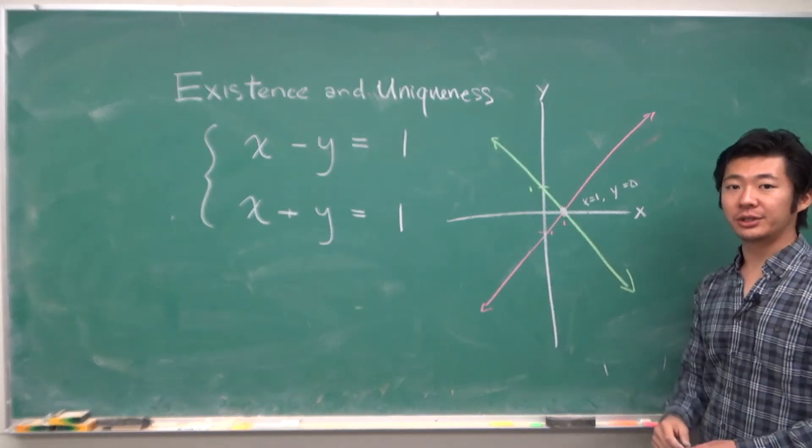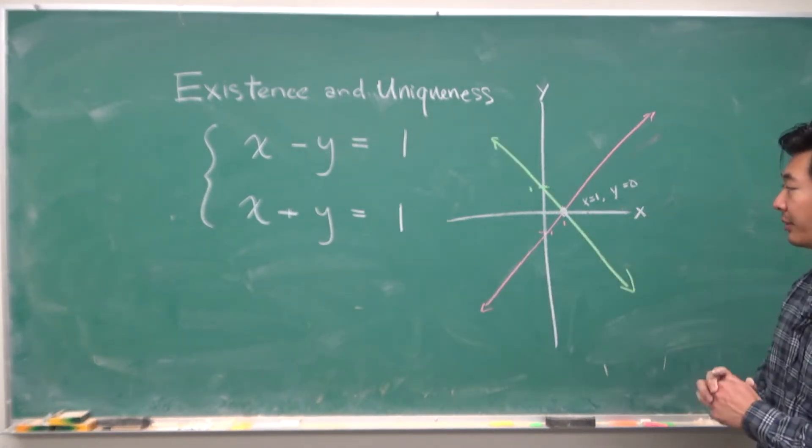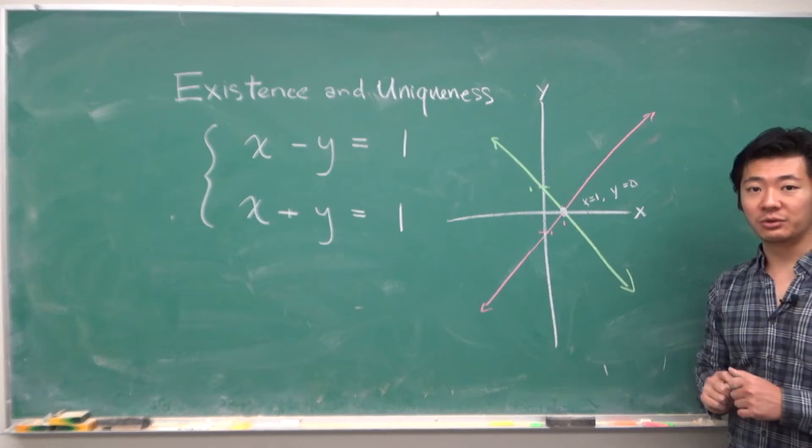And this is their only solution. No other points will satisfy both equations at the same time. So this is an example of when there is only one unique solution.